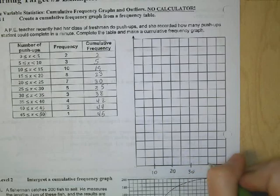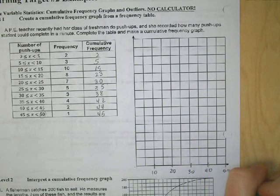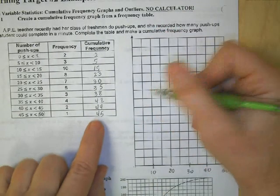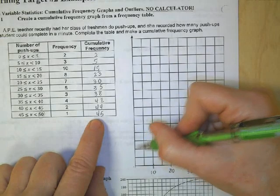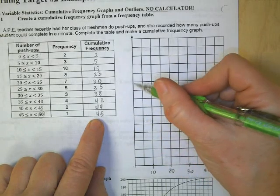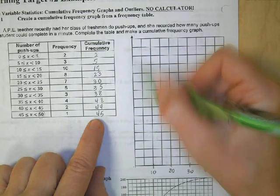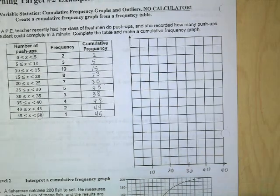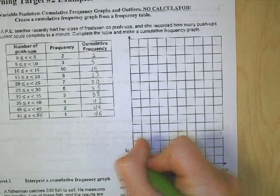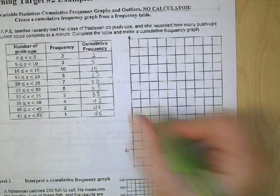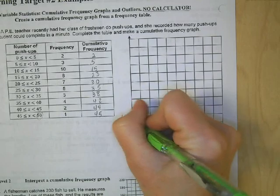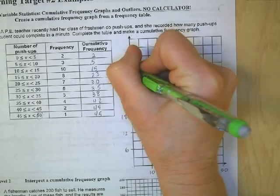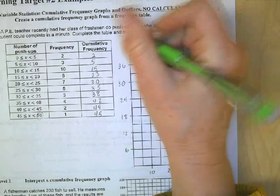The Y-axis is cumulative frequency and needs to reach 45. I count fifteen spaces, so 45 divided by 15 gives three — each gridline represents three. I'll label every other line: three, six, twelve, eighteen, twenty-four, thirty, thirty-six. Use a good scale so you take advantage of all the space given.